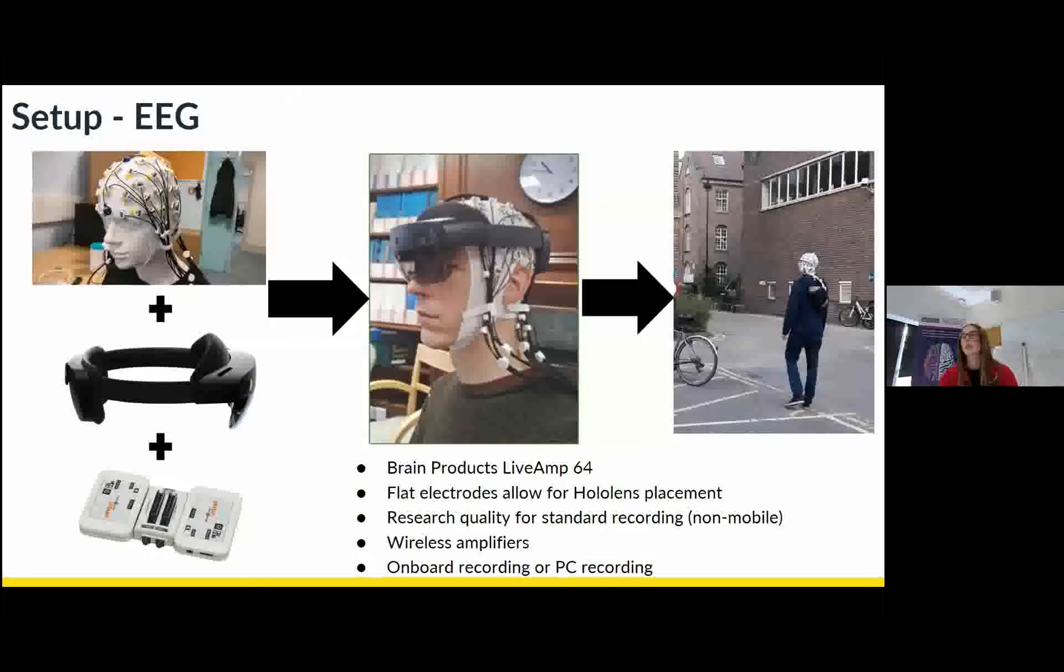So I'll just talk you through our mobile EEG setup. So for that we use the Brain Products LiveAmp 64 channel system. And you can see it here in the top left corner. And you can see that it has flat electrodes, which is quite convenient in terms of comfort when you're placing a head mounted device on top of it as it reduces any discomfort.